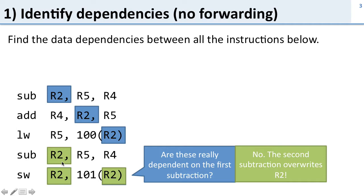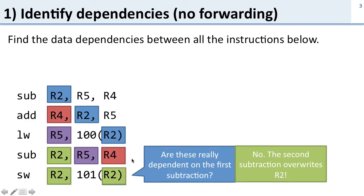What else is dependent? Load word is going to produce R5 and we use R5 later, and the add produces R4 and we use R4 further down. So these are all the instruction dependencies in this set of code.